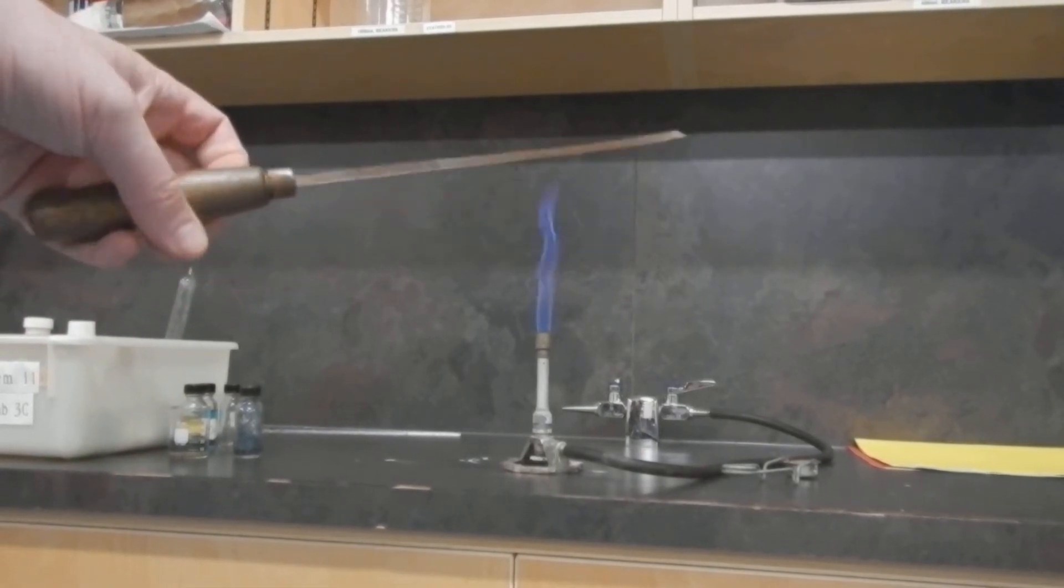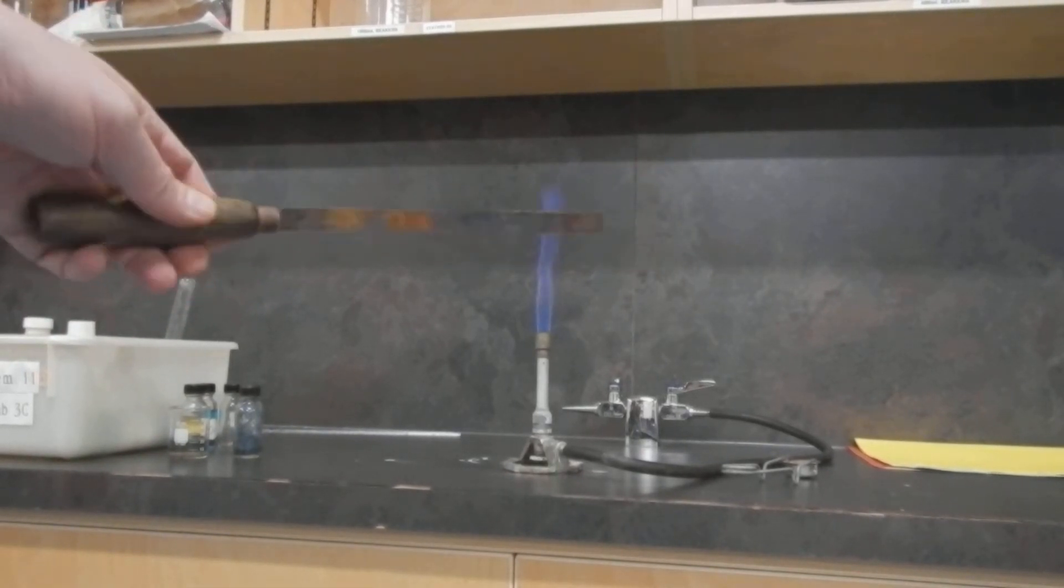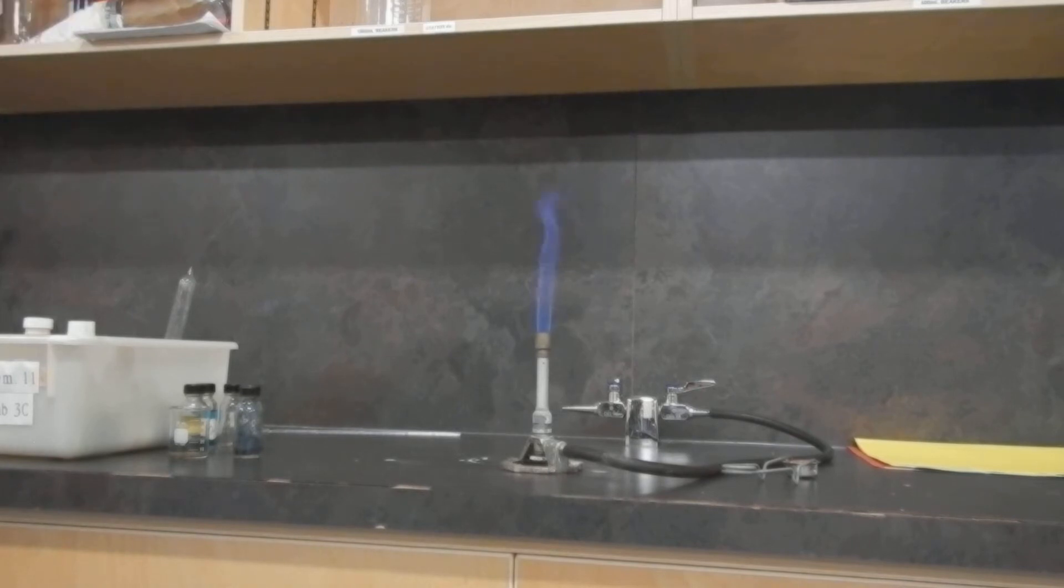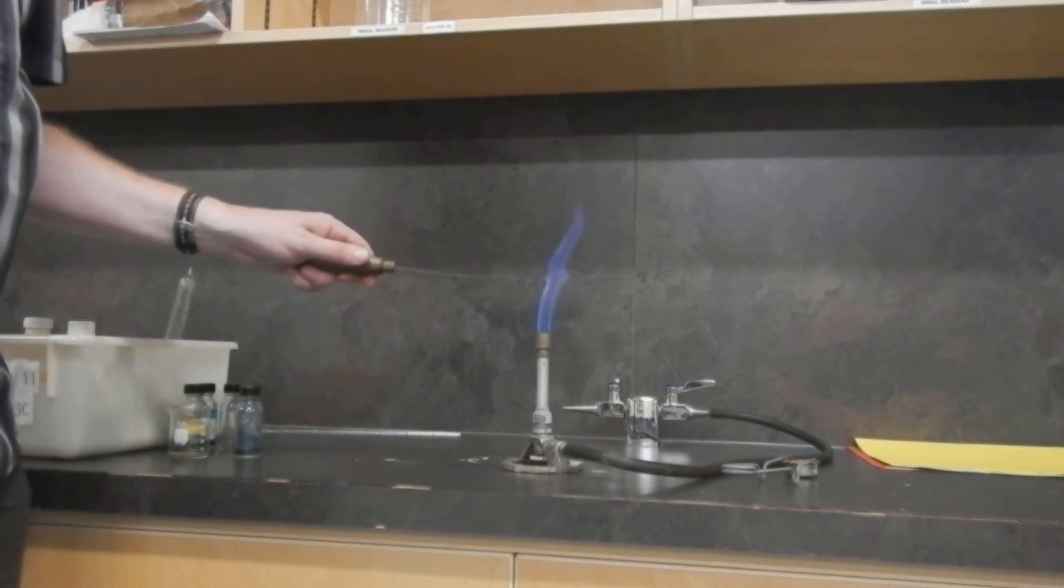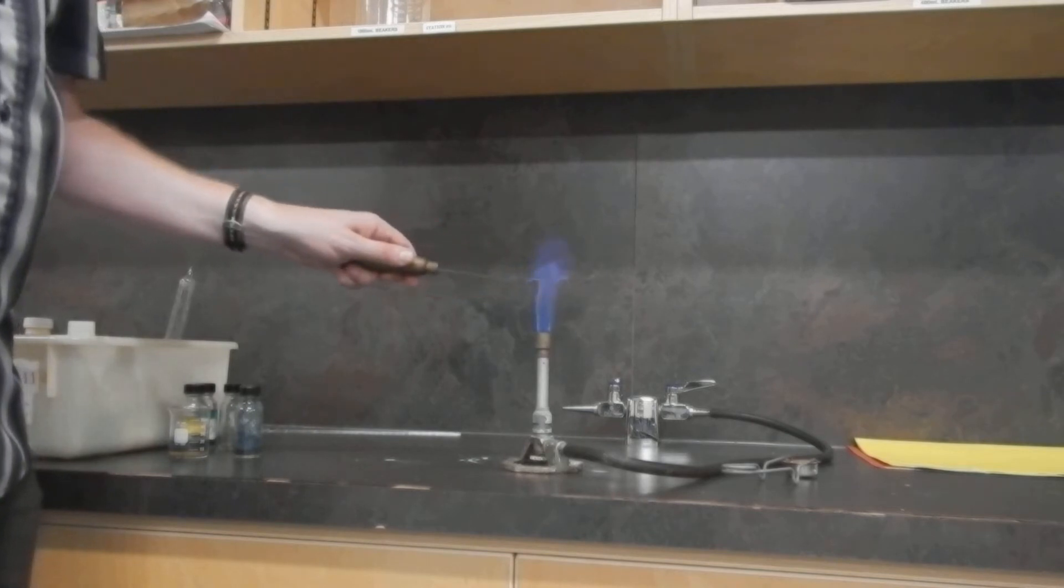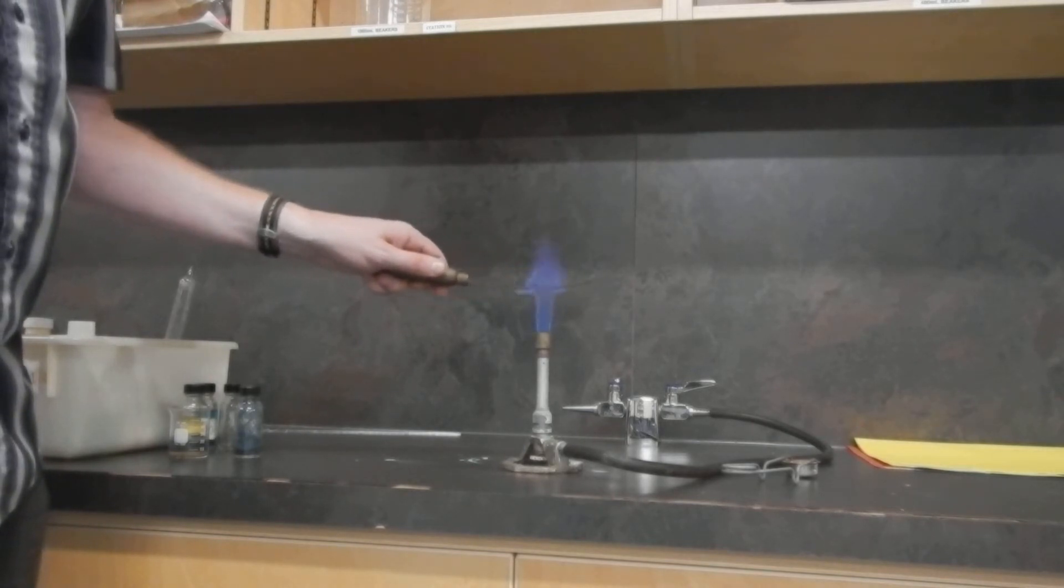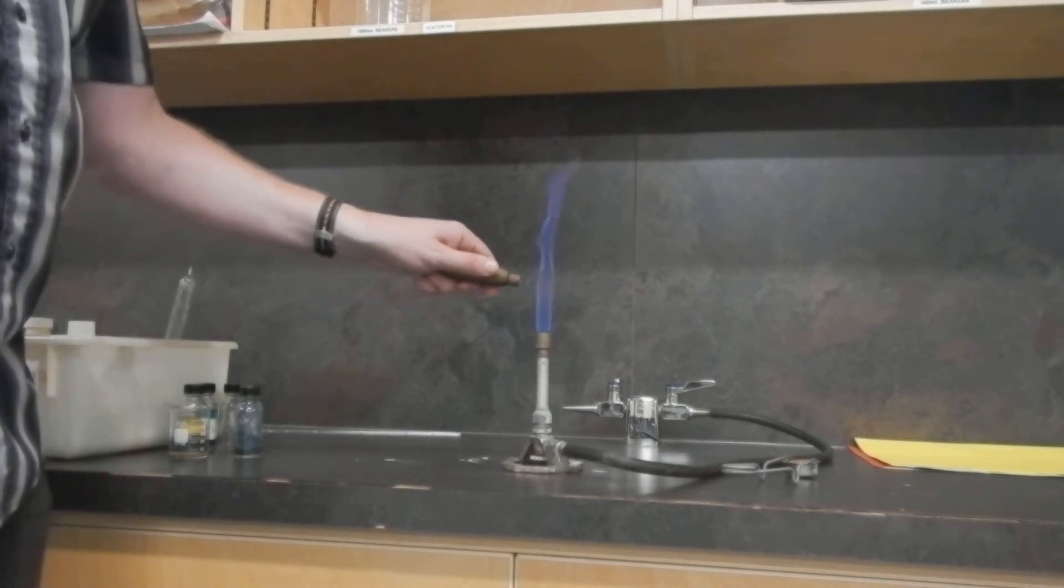I've got my bimetallic strip which has brass on one side, steel on the other. They expand at different rates. So when I place it in a flame, it does not take long at all to bend.